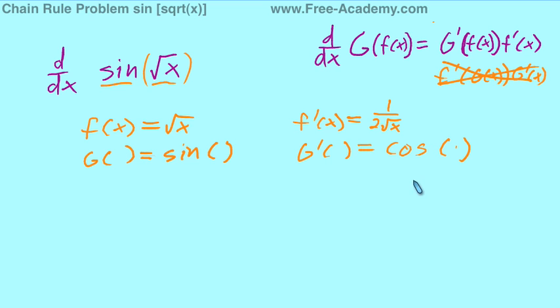Now that we have that, let's put everything into our equation here. Our g prime parenthesis is cosine, and our f of x is the square root of x still, and our f prime of x is 1 over 2 root x.